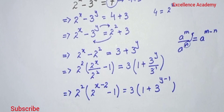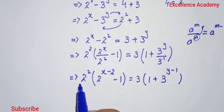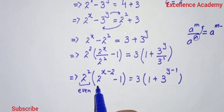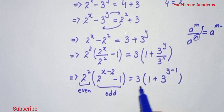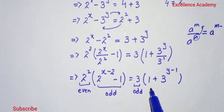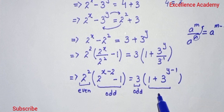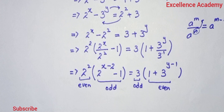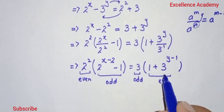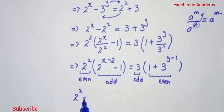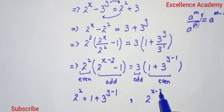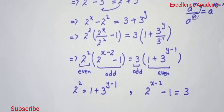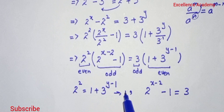From the equation, 2^2 is an even number and 2^(x minus 2) minus 1 is an odd number. On the right hand side, 3 is an odd number and 1 plus 3^(y minus 1) produces odd with odd. Comparing even with even and odd with odd, we get two equations: Equation 1 — 2^2 equals 1 plus 3^(y minus 1), and Equation 2 — 2^(x minus 2) minus 1 equals 3.